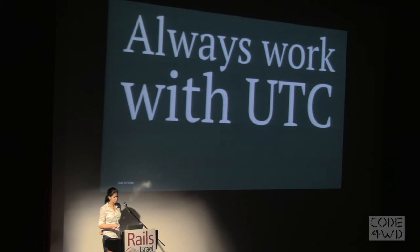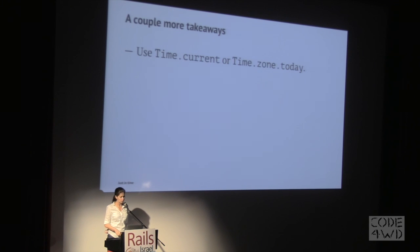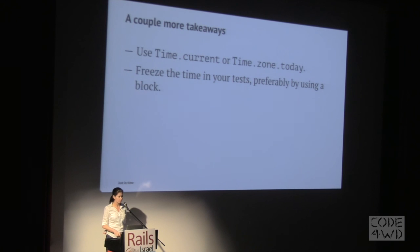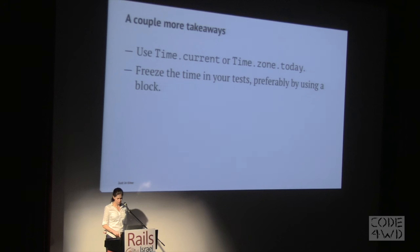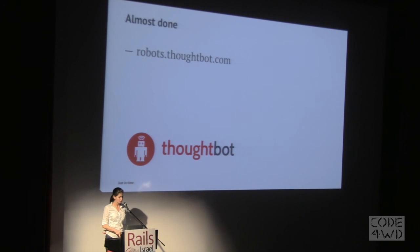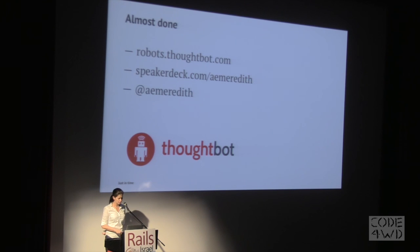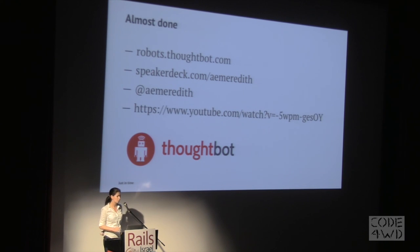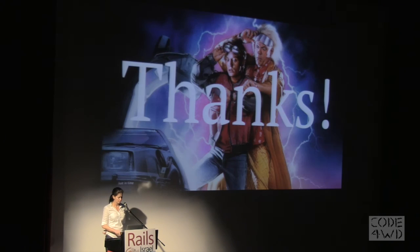The first takeaway: always work with UTC as much as you can. A couple more takeaways: use Time.current or Time.zone.today — that will solve most of your problems in your Rails app. And freeze the time in your tests, preferably using a block. When I was working on this app in Australia and then came to visit Israel, half of my tests failed — so I learned I really need to stub my time in my specs. You can find a write-up of this talk on the ThoughtBot blog, and the slides will be on Speaker Deck. If you want a funny video about time zones, it will make you laugh. Thank you.